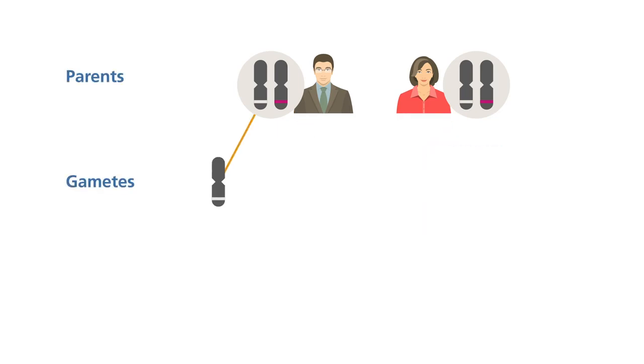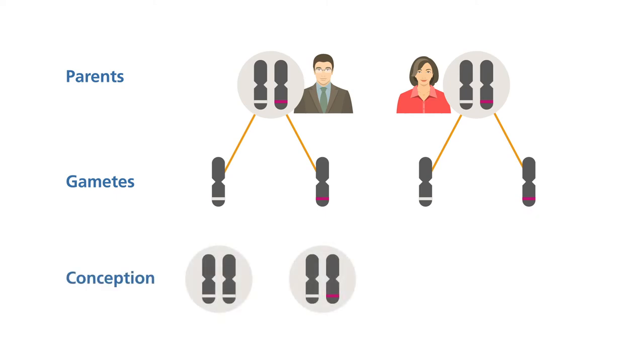A parent passes on one from each pair of their chromosomes to each child. Which one they pass on is down to chance. There are therefore four possible combinations of these chromosomes that the children of this couple could inherit.